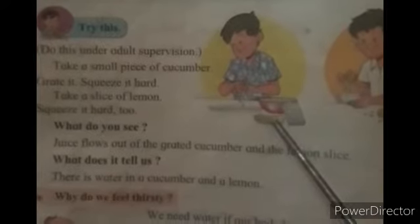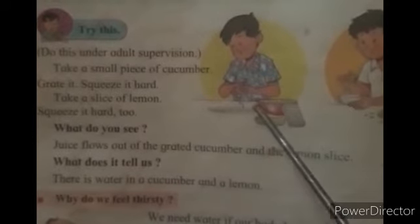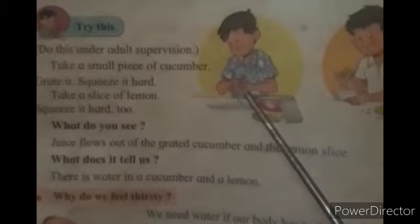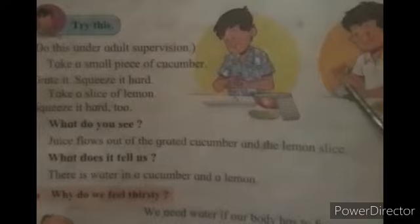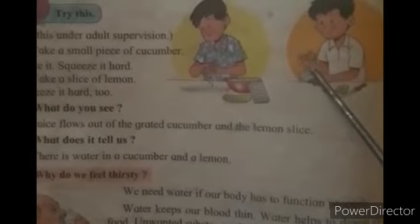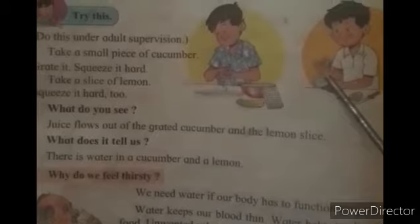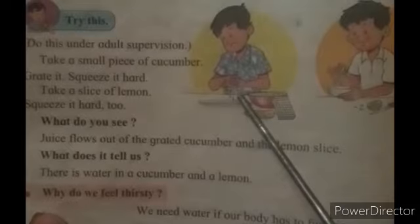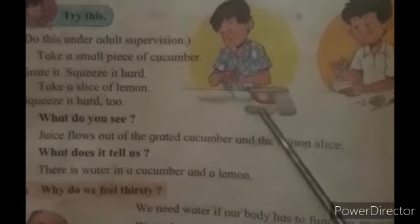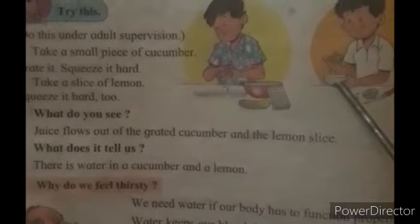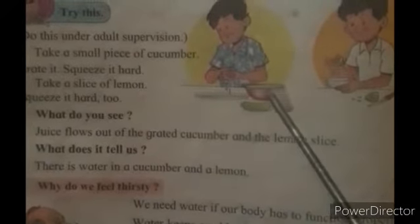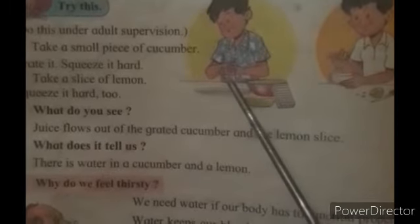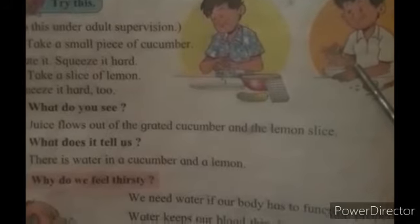Try to do this at home. Take a piece of cucumber and squeeze it. See, this boy is squeezing it hard. And take a slice of lemon — he took a slice of lemon and tried to squeeze it hard. What do you see? Juice flows from the cucumber as well as from the lemon slice. This tells us there is water in a cucumber and also in a lemon.